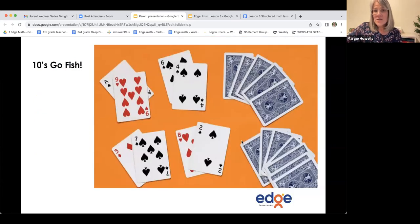Play tens go fish. This is a wonderful variation of go fish. Knowing the partners to make 10 is so very important for young children. So playing instead of asking for, do you have a pair? Do you have two cards that will make 10? If I have a two, then I know I need to ask for an eight. So this is another great way to play a game.